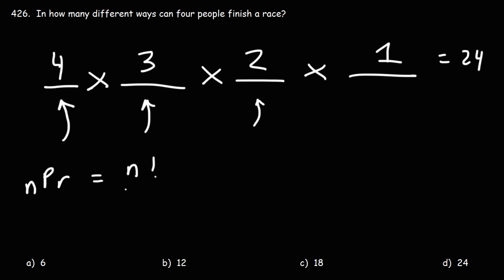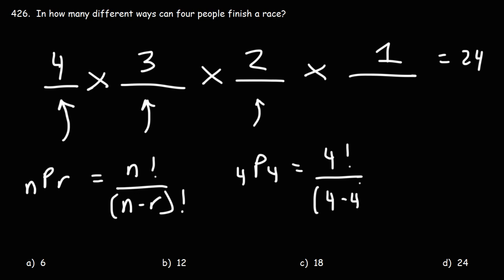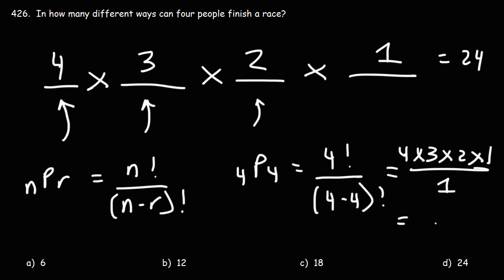You can also solve this using the permutation formula NPR, which equals N factorial over (N minus R) factorial. Here we're taking four individuals from a group of four, so this is 4P4, where both N and R equal four. That gives us four factorial over (four minus four) factorial, which is four factorial over zero factorial. Since four factorial is 4×3×2×1 = 24 and zero factorial equals one, the answer is 24. D is the right answer.